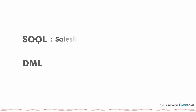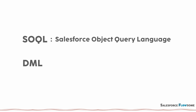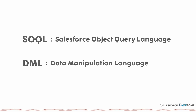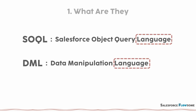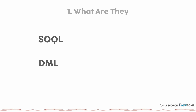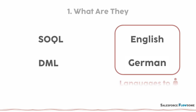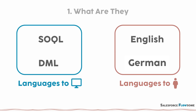First, we start with the basic concept. SOQL stands for Salesforce Object Query Language, while DML stands for Data Manipulation Language. They both have the word 'language' in the names. So just like English and German are languages we use to communicate with humans, these two are languages we use to communicate with the system.